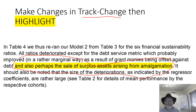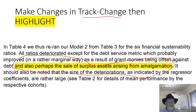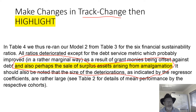Highlighting in yellow means changes stand out like a sore thumb so reviewers can spring straight to them. That means a quicker review and a quicker final unconditional acceptance. Here's an example of one of those minor revisions: talking about selling assets, I added 'and also perhaps the sales of surplus assets arising from amalgamation.' Simple as that.